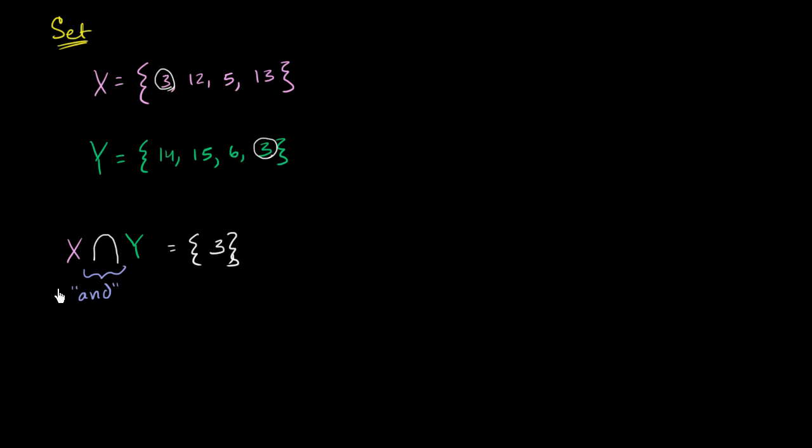Now another common operation on sets is union. So you could have the union of X and Y. And the union I often view, or people often view, as OR. So we're thinking about all of the elements that are in X or Y. So in some ways, you can kind of imagine that we're bringing these two sets together.